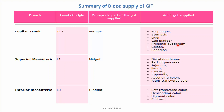As you know, the duodenum has four parts. The first part of the duodenum and the upper half of the second part of the duodenum will be supplied by the foregut, exactly at the opening of the common bile duct. The lower half of the second part, third part, and fourth part — the distal duodenum — and part of the pancreas are supplied by the midgut.